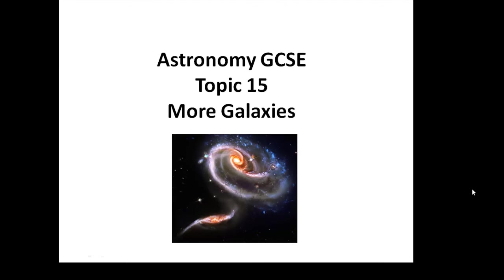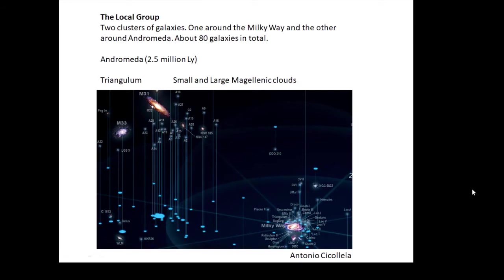Astronomy GCSE topic 15: more galaxies. Our galaxy is part of something called a local group. There are about 80 galaxies in our local group, with two main clusters — one around the Milky Way and the other around Andromeda. Andromeda and the Milky Way are the two big galaxies in our local group. The local group are the galaxies which have a gravitational effect on each other.